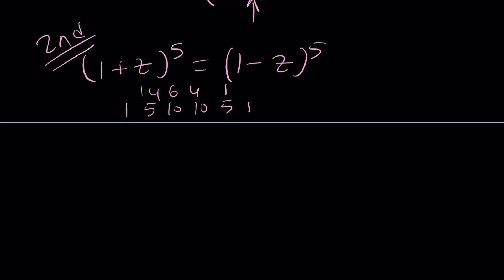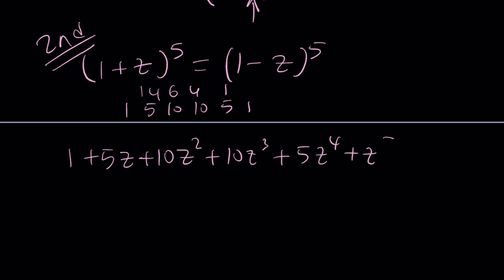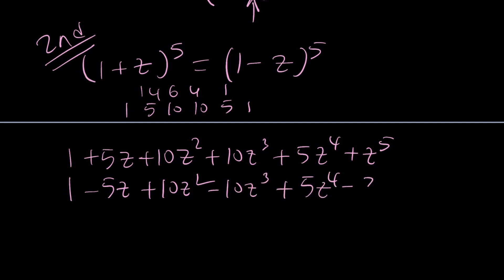In other words you can use 5 choose 1, 5 choose 2, and so on. Expanding the left side: 1 + 5z + 10z² + 10z³ + 5z⁴ + z⁵. The right side alternates in sign: the terms with the same sign will cancel out — specifically 1, 10z², and 5z⁴ cancel.